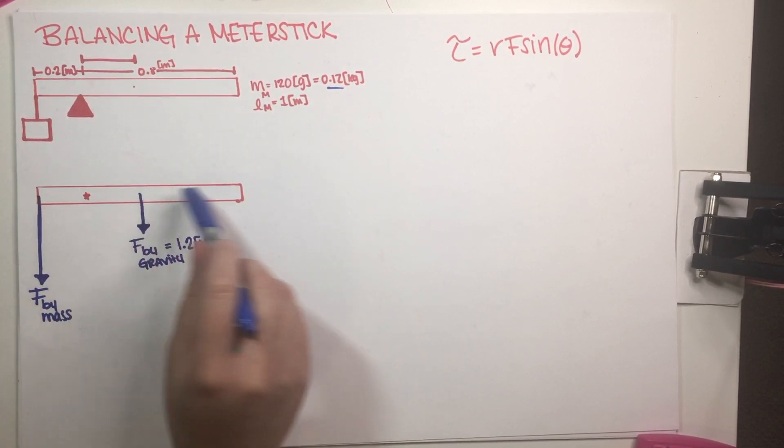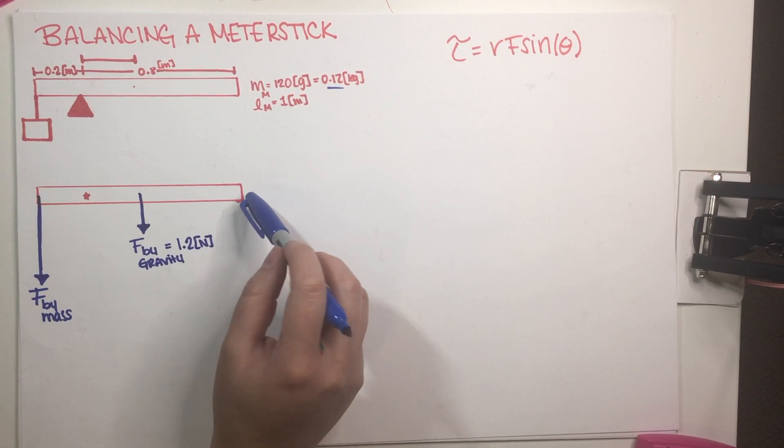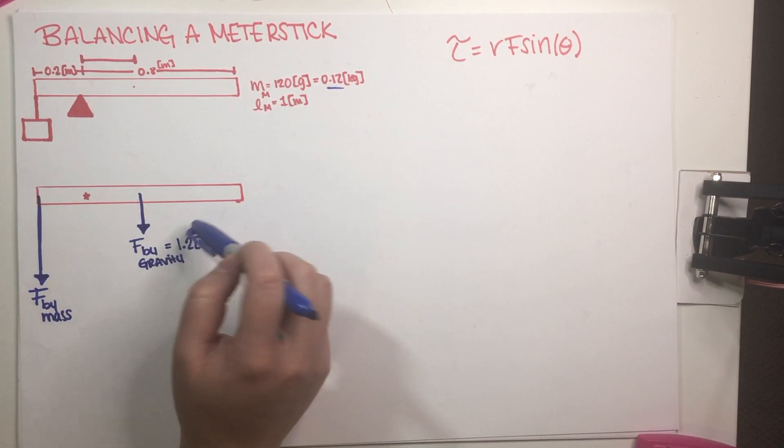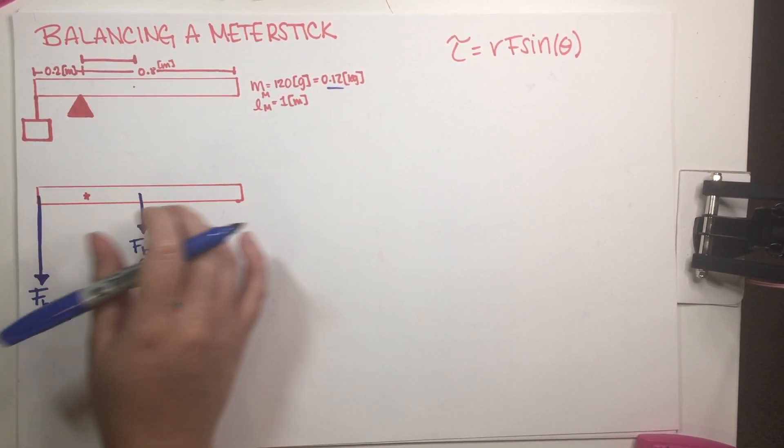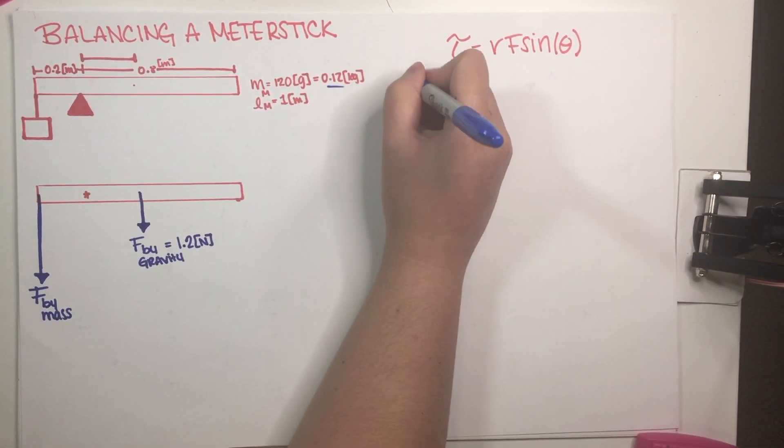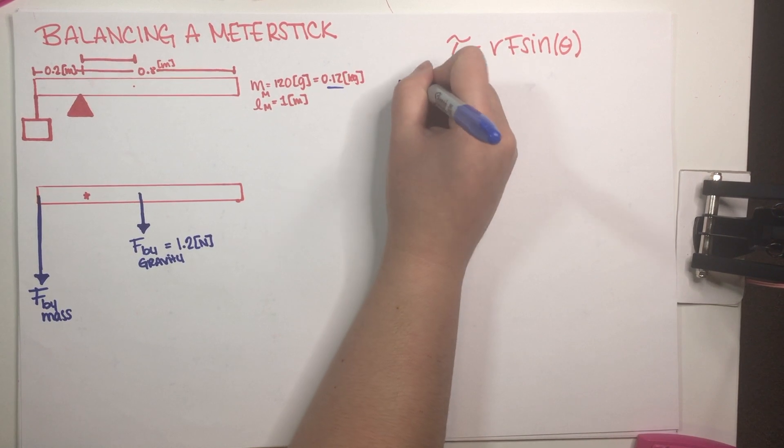Now, this meter stick, per the instructions, is not moving, and it is also not rotating. Now, the fact that it is not moving in space, what does that mean? Well, if it's not moving in space, delta V is equal to zero, which means that delta P is equal to zero.